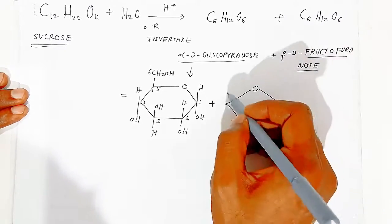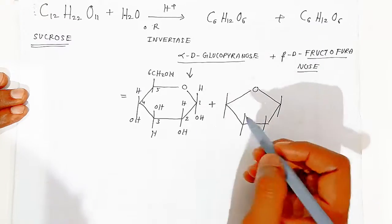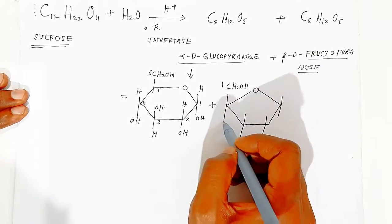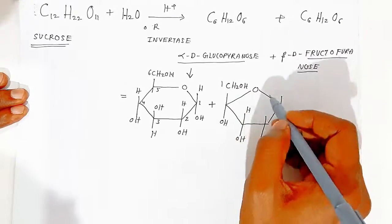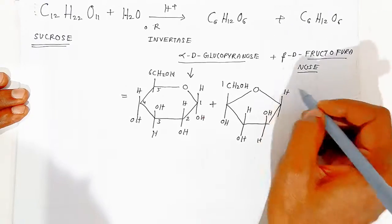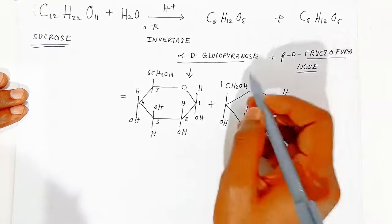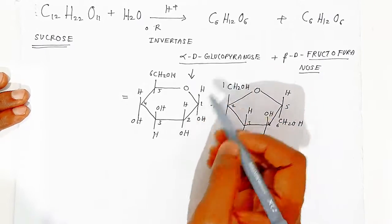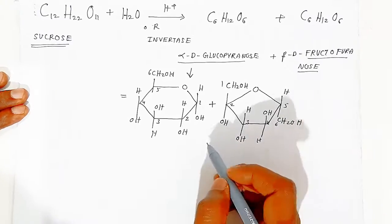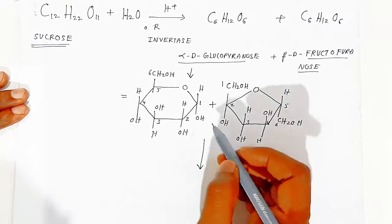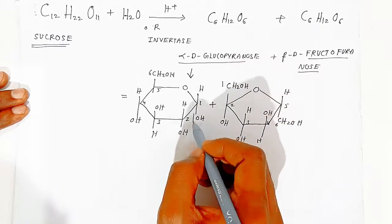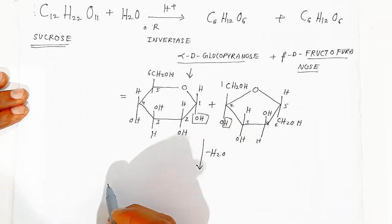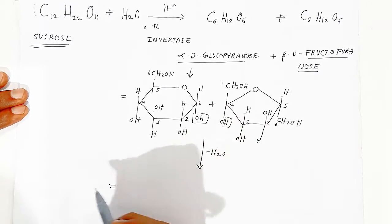For beta-D-fructofuranose, fill valencies with hydrogen and hydroxyl. Carbon 1 is CH₂OH; label carbons 1 through 6. Then the hydroxyl of alpha-D-glucopyranose reacts with the hydrogen of beta-D-fructofuranose, eliminating a water molecule to give the structure of sucrose.